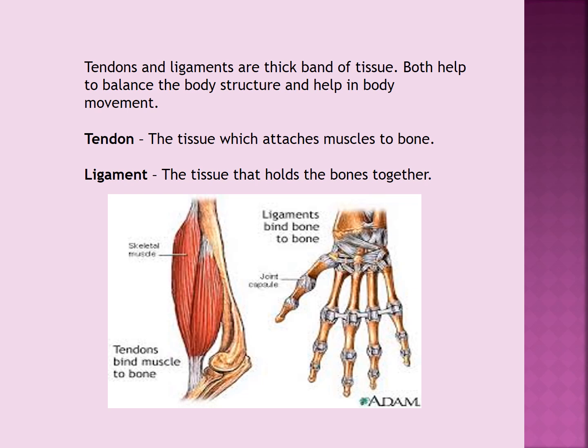How can we differentiate between tendons and ligaments? A tendon is a tissue which attaches muscles to bones, whereas a ligament is a tissue that holds the bones together. If you can see in the picture, you can easily identify them — in the first picture the tendon attaches the muscle and bone together, while in the second picture, ligaments are present wherever two bones are meeting together.